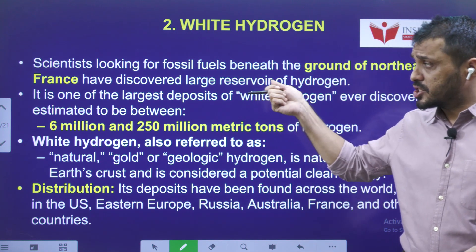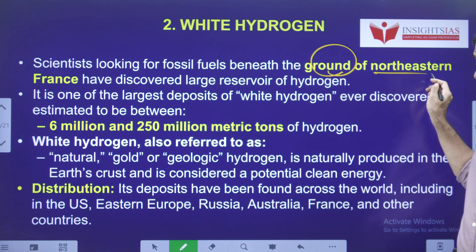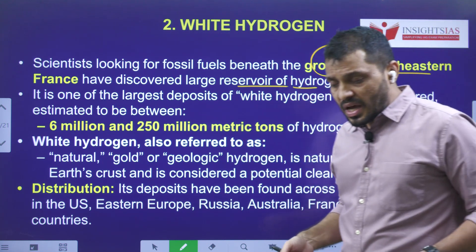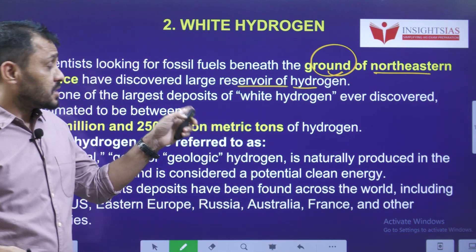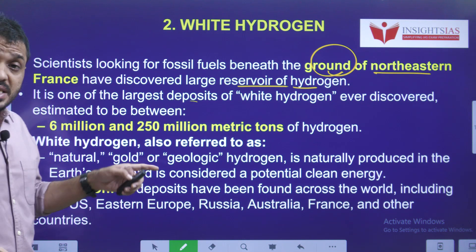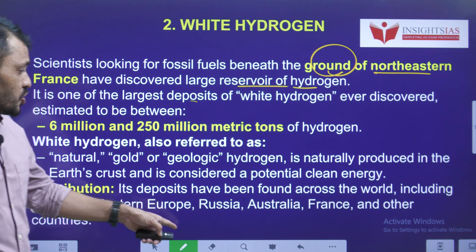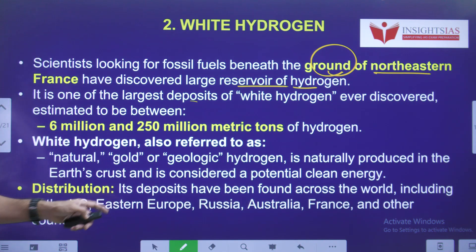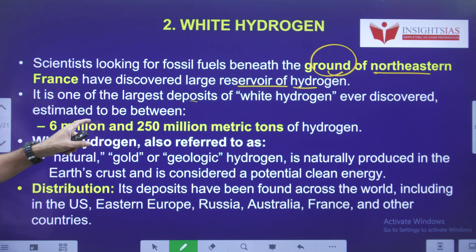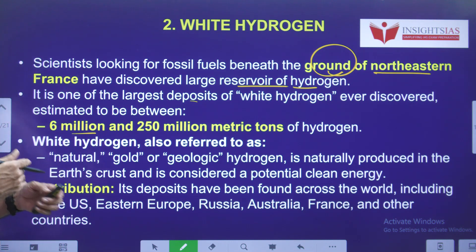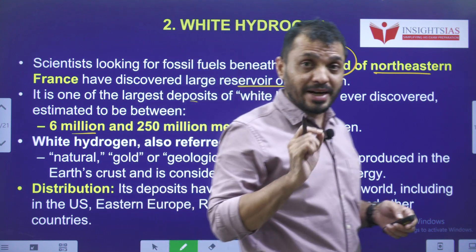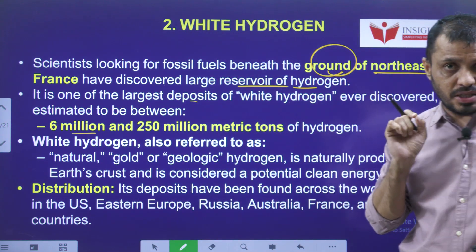Regarding White Hydrogen: scientists looking for fossil fuels discovered reservoirs of hydrogen under northeast France. So far, this is one of the largest deposits of white hydrogen ever discovered. White hydrogen has already been found in places such as the US, Eastern Europe, Russia, Australia, and France. Scientists estimate the deposits range between 6 million to 250 million metric tons, making this very significant.